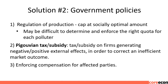Solution No. 2: Government Policies. (1) Regulation of production — cap at the socially optimal amount, though it may be difficult to determine and enforce the right quota for each polluter. (2) Pigouvian tax or subsidy — a tax or subsidy on firms generating negative or positive external effects in order to correct an inefficient market outcome. (3) Enforcing compensation for affected parties.